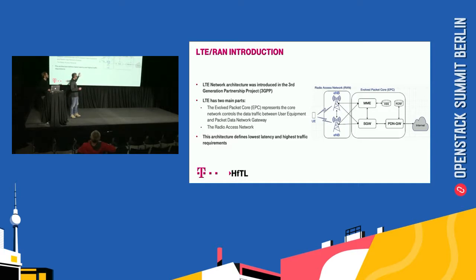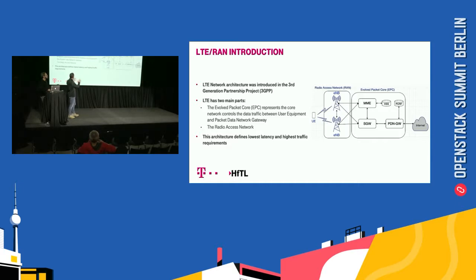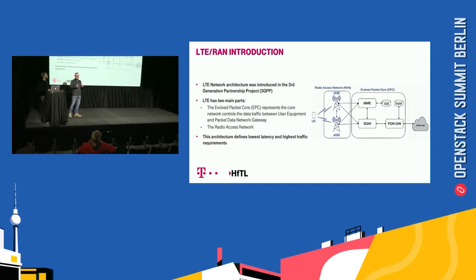So, to understand what we do, this is just the plain architecture of LTE or radio access network. Important to know is that we have two parts: on the right-hand side, the EPC — the overall packet core — taking care of the controls and the data exchange between the user environment and what we call an antenna. And the second part is the radio access network, or the so-called ENB component.